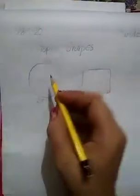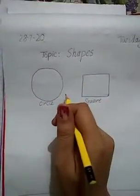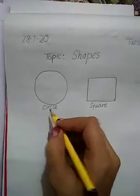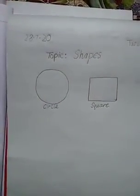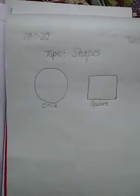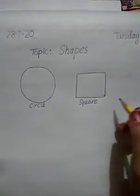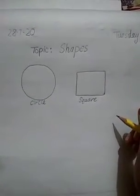Round and round, no corners: C-I-R-C-L-E, circle. Four equal lines and four corners is square.